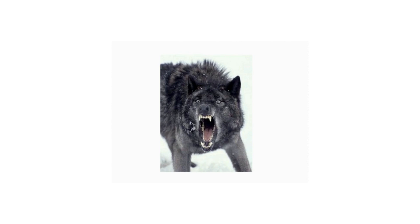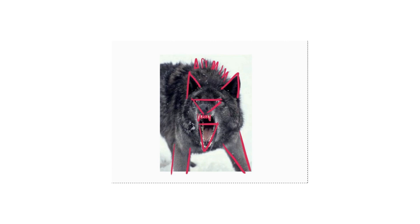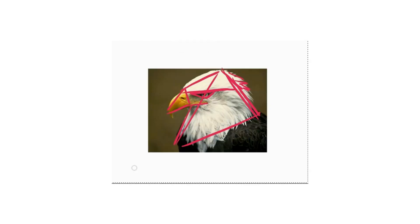Genetically dogs are the same as wolves — they descended from wolves, we just selectively bred them. Our wolf here — see how many triangles you can find just in the design of this thing. Same thing with this eagle, which is basically a killing machine. The bald eagle's favorite food is snakes; they're not afraid of poisonous snakes, they'll just rip them right to shreds.